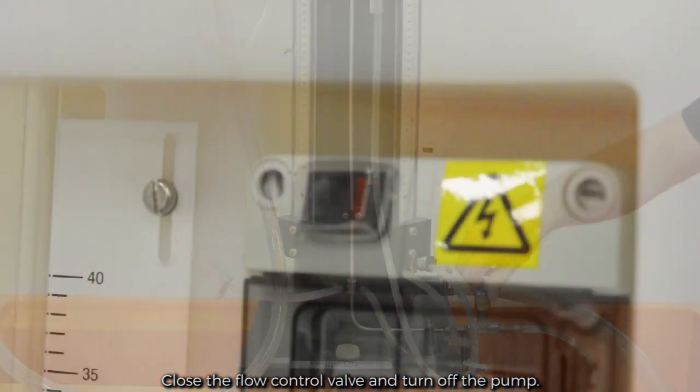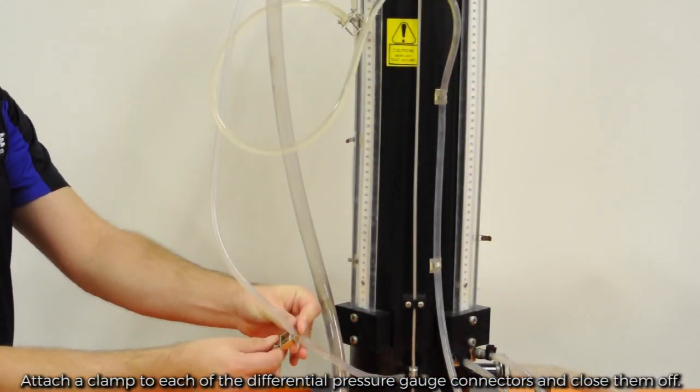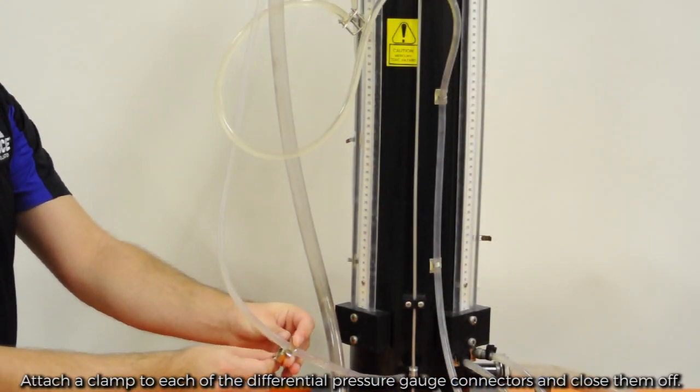Close the flow control valve and turn off the pump. Attach a clamp to each of the differential pressure gauge connectors and close them off.